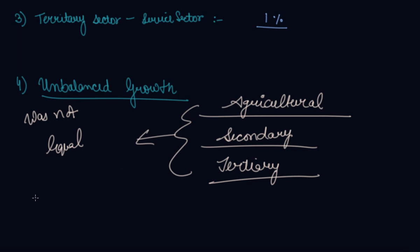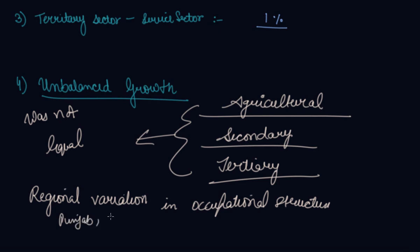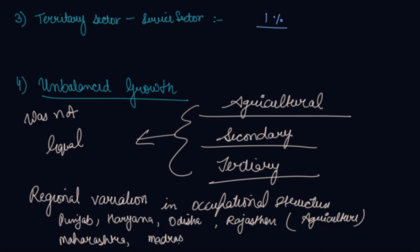Regarding regional variations in occupational structure, Punjab, Haryana, Odisha, and Rajasthan were more dependent on agriculture.